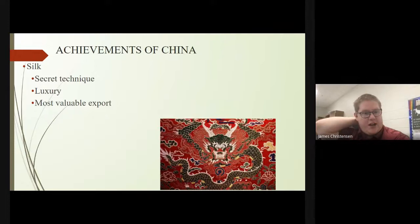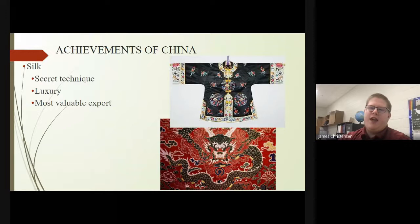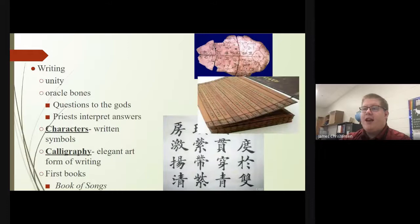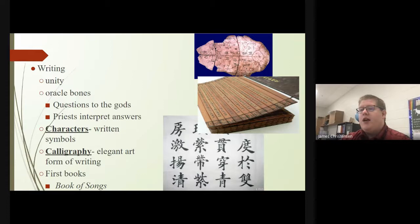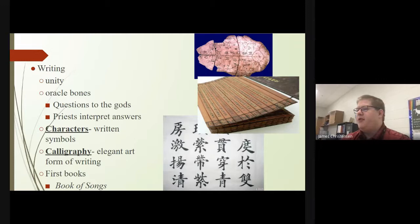Moving on to achievements of China: we have silk, which was a secret technique and a major luxury for ancient China and their most valuable export for a long time. Silk was really not available in other parts of the world and helped China grow their economy. We also have writing, which provided a lot of unity. They had oracle bones — questions of the gods — which priests would interpret. They used a number of written characters and practiced calligraphy, the elegant art form of writing. Their first books were the Book of Songs, and there's also an example here of an oracle bone.